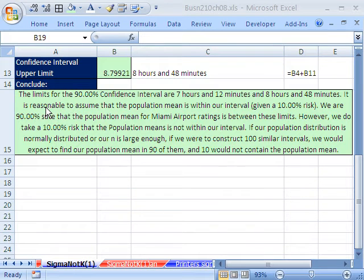Concluding is similar to what we did before. We can say the limits for the 90% confidence interval are between 7 hours 12 minutes and 8 hours and 48 minutes. It is reasonable to assume that the population mean is within our interval, given a 10% risk. The second sentence is from the next chapter on hypothesis testing. We're making reasonable attempts to make an interval that should hold our population parameter. If we were to construct 100 similar intervals, what it means is that 90 of them would have the population mean and 10 of them would not. When we come back, we'll have another example for when sigma is not known. See you next video.